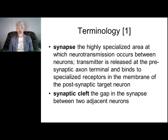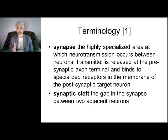Next, a very important term: the synapse. A synapse is the highly specialized area at which neurotransmission occurs between neurons. Transmitters are synthesized at the presynaptic axon terminal and bind to specialized receptors in the membrane of the postsynaptic target neuron. I recommend watching videos about synapses — it becomes much more understandable visually.